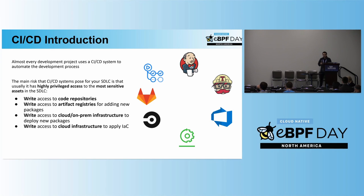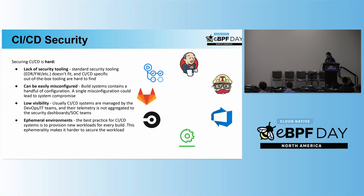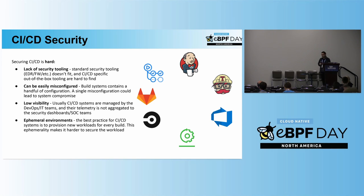Lately we are observing that attacks on software supply chains are arising because of these risks. Securing CI/CD is hard. First, we don't have a lot of security tooling. Standard security tooling like antiviruses, EDR, and firewalls just don't fit for these purposes. The other application security tooling focuses more on finding vulnerabilities and vulnerable packages instead of securing the pipeline itself.